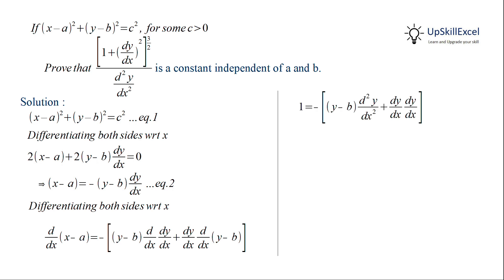So differentiating this on both sides we get 1 = -(y - b)·d²y/dx² - (dy/dx)². And then we can rearrange the terms to get (y - b) in terms of dy/dx and d²y/dx².